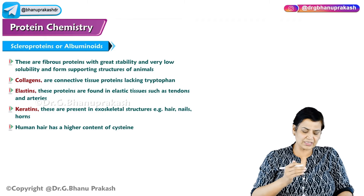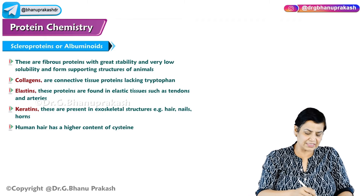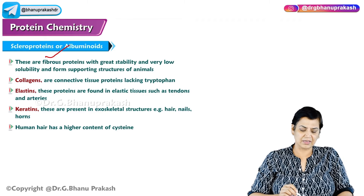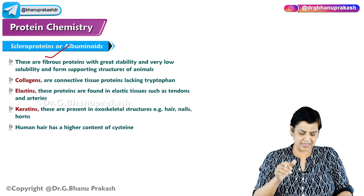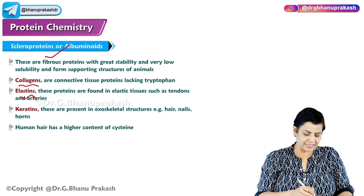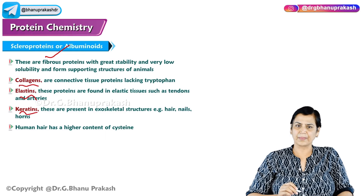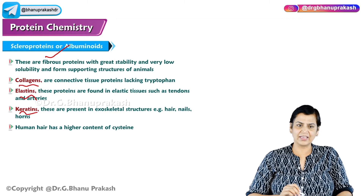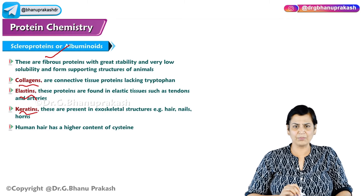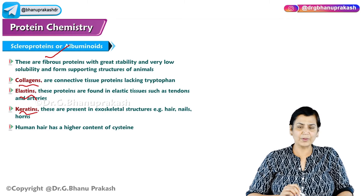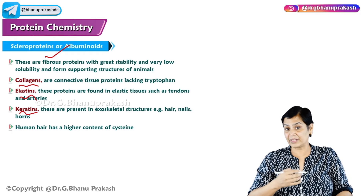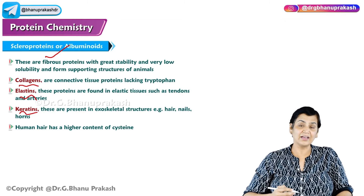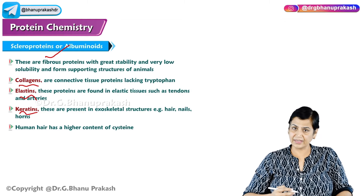One more important category is scleroproteins. Scleroproteins provide structural support — examples are collagen, elastin, and keratin. This is highlighted again because it is very important: you must know where collagen, elastin, and keratin are present and what their functions are.